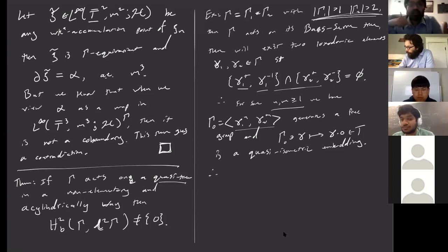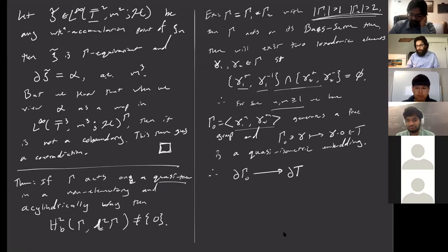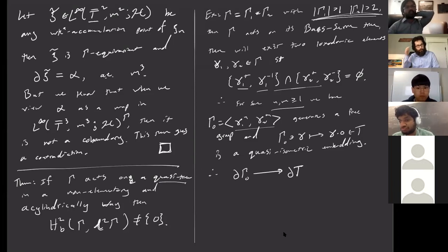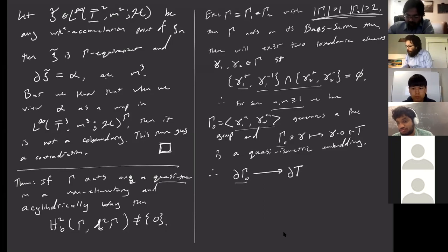So we get an embedding from the boundary of the free group into the boundary of the tree. This is nice because the tree need not have compact boundary. The Bass-Serre tree, if Γ₁ and Γ₂ are infinite, won't have finite degree, and the boundary of this Bass-Serre tree will not be compact — it'll be a Polish space in general. However, Γ₀ being a free group on two generators, its boundary will be a nice compact space.